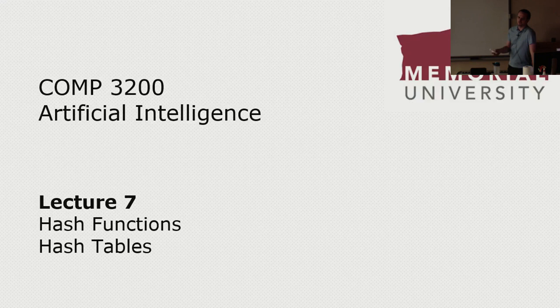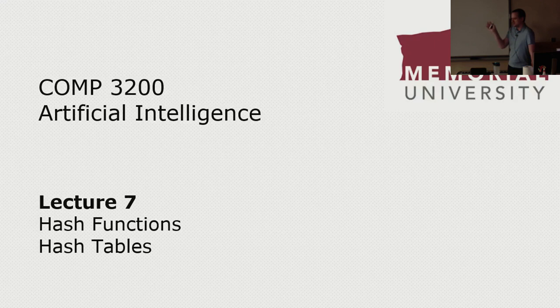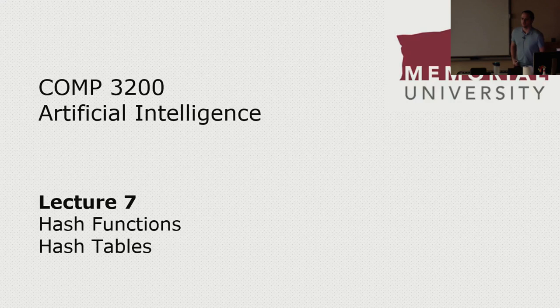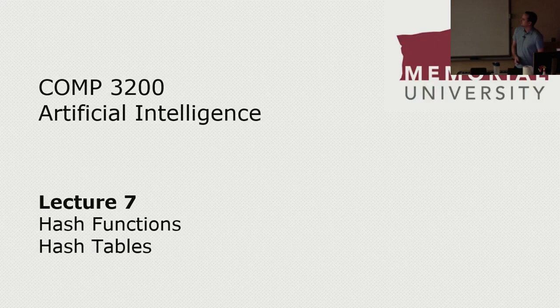In order to implement a hash table, which is essentially just an efficient data structure to look up something, you're going to need to know what a hash function is. You could, of course, use a built-in one, but this is computer science — we should know how it works. This is an example of a lecture that may not be directly applicable to assignment work, but will be applicable later on if you're actually doing real AI stuff, and therefore applicable to a midterm exam.